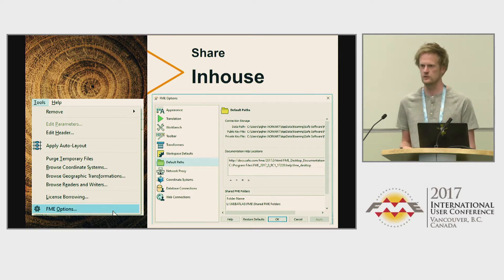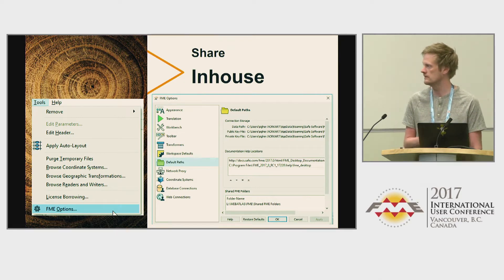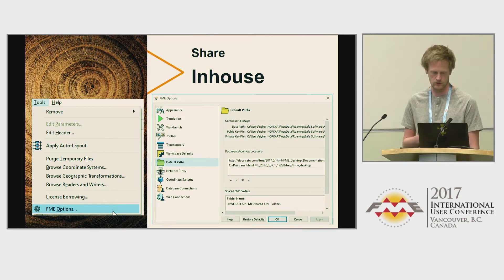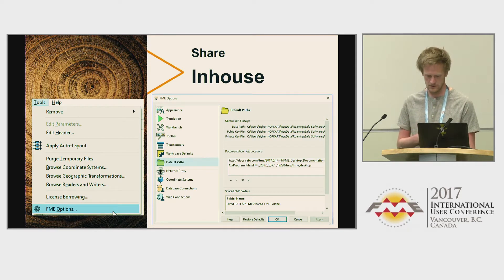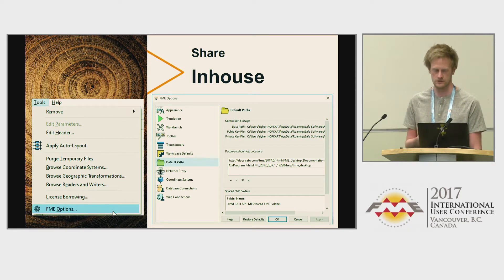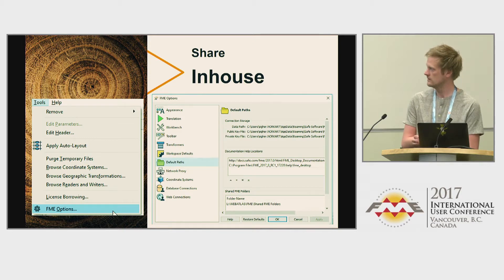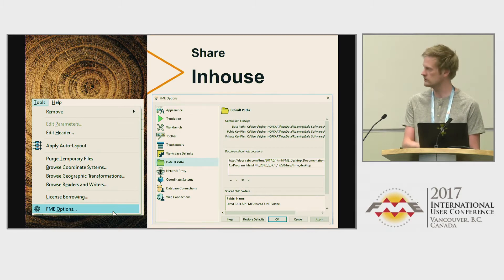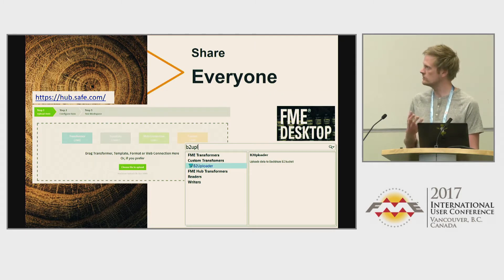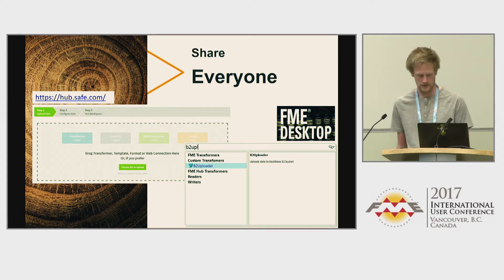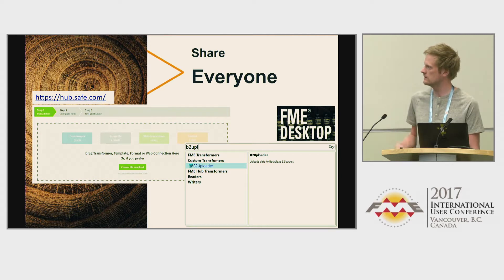When you want to share your custom transformer - you don't want it only on your own computer - if you want to share it within your organization you use a network disk or common drive, upload it there, and everyone has access. We use this a lot at our company to share important stuff. If you want to give it to everyone, you upload it to the FME Hub and it will automatically appear in Workbench for every FME Desktop user.